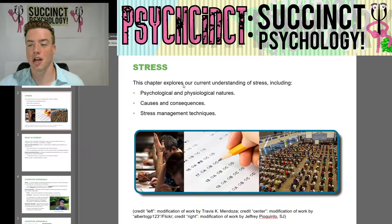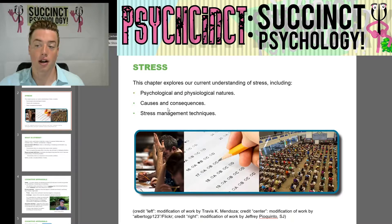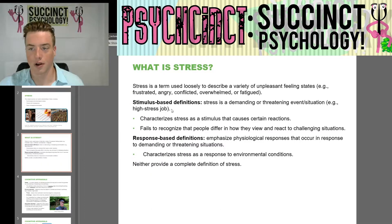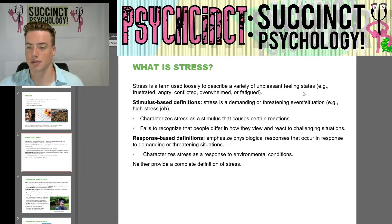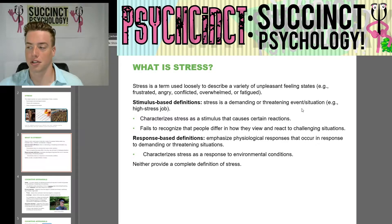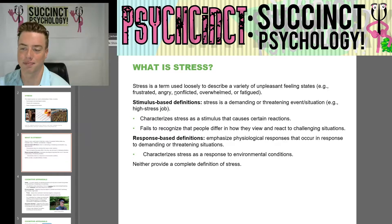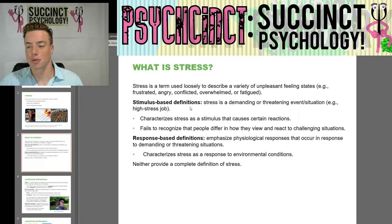So, what is stress? This chapter explores our current understanding of stress, including psychological and physiological natures, causes and consequences, and stress management techniques. Stress is a term used loosely to describe a variety of unpleasant feeling states — for example, frustrated, angry, conflicted, overwhelmed, or fatigued. Stimulus-based definitions characterize stress as a demanding or threatening event or situation, such as a high-stress job like serving in the military. This characterizes stress as a stimulus that causes certain reactions, but fails to recognize that people differ in how they view and react to challenging situations.